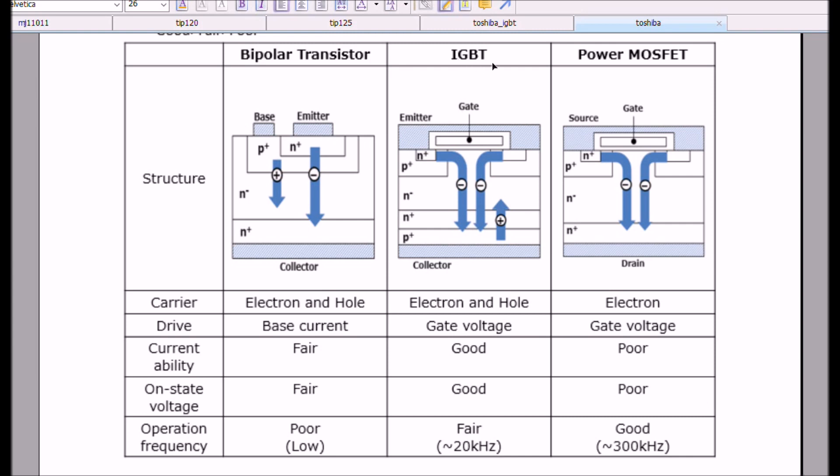In an insulated gate bipolar transistor, it combines, as I said before, characteristics of a MOSFET, particularly as a high impedance input. It operates by electron and hole flow, but the vast majority of carriers are electrons. The emitter, of course, is negative. Most of the charge carriers go to the positively charged collector. As I said again, it's voltage operated. Has good current capability, good on-state voltage capabilities, and a fair frequency of approximately 20 kilohertz.